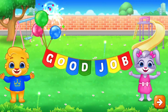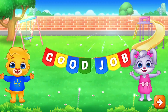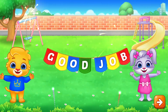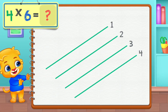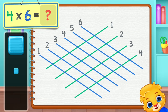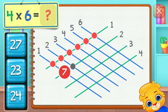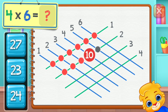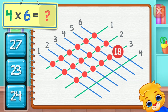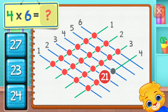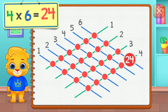Good job! Four times six equals... Ten, eleven, twelve, thirteen, fourteen, fifteen, sixteen, seventeen, eighteen, nineteen, twenty, twenty-one, twenty-two, twenty-three, twenty-four. Four times six equals twenty-four.